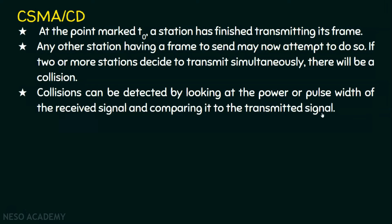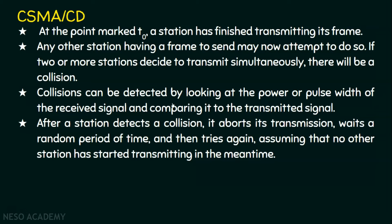The power or pulse width of the transmitter signal will normally be greater than that of the received signal; by comparing these two, we can detect a collision. After a station detects a collision, it aborts its transmission, waits for a random period of time, and then tries again, assuming no other station has started transmitting in the meantime. The main idea behind this is exponential back-off: if two stations collide, each waits a random period before retransmitting, reducing the possibility of another collision.